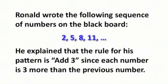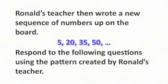Ronald wrote the following sequence of numbers on the blackboard: 2, 5, 8, 11. He explained that the rule for his pattern is add 3, since each number is 3 more than the previous number. Ronald's teacher then wrote a new sequence of numbers up on the board: 5, 20, 35, 50.